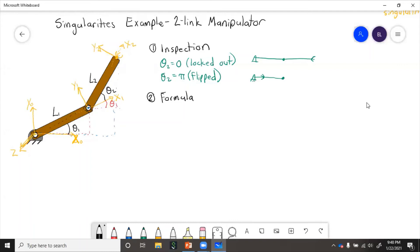For the formula method, step one is forward kinematics. Step two is take the derivative, get velocity.